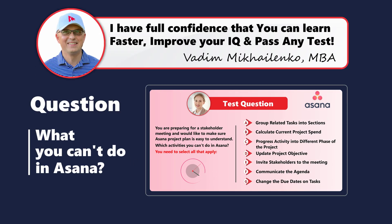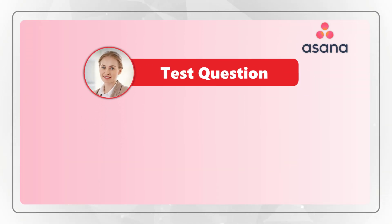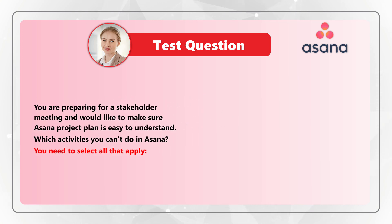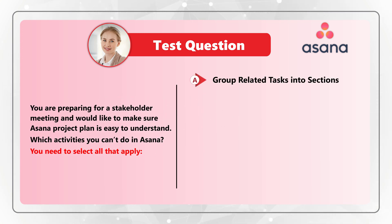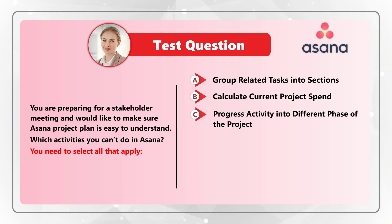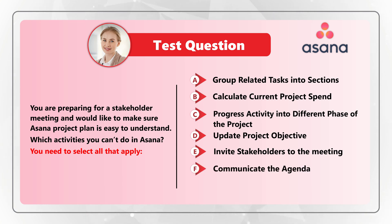Here is a tricky question we frequently see on the test. You are preparing for a stakeholder meeting and would like to make sure the Asana project plan is easy to understand. Which activities can you NOT do in Asana? Select all that apply. Choice A: Group related tasks into sections. Choice B: Calculate current project spend. Choice C: Progress activity into a different next phase of the project. Choice D: Update project objective. Choice E: Invite stakeholders to the meeting. Choice F: Communicate the agenda. Choice G: Change the due dates on tasks.